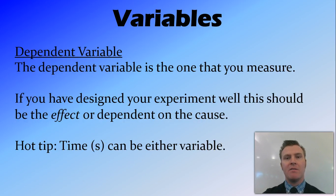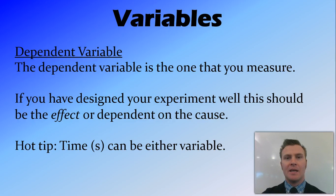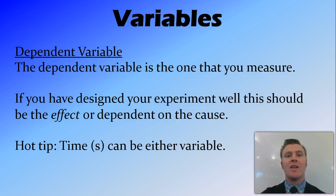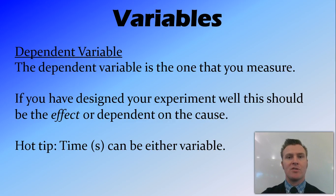The next variable is the dependent variable, which is the one that you measure. This should be the effect part of the cause-and-effect relationship, and it's dependent on the cause or independent variable. Some people think time is always the independent variable, but time can be either. If I'm looking at how far an object traveled over time, time is the independent variable, measured at 10, 20, 30, 40 seconds. But if I'm measuring how long it takes something to travel a certain distance, time is the dependent variable and distance — say 100, 200, 300 meters — is the independent variable.